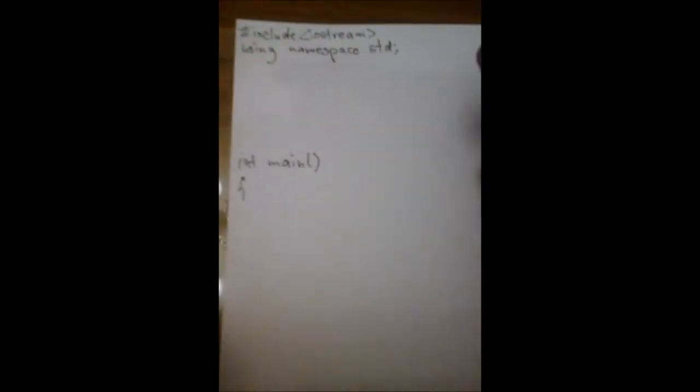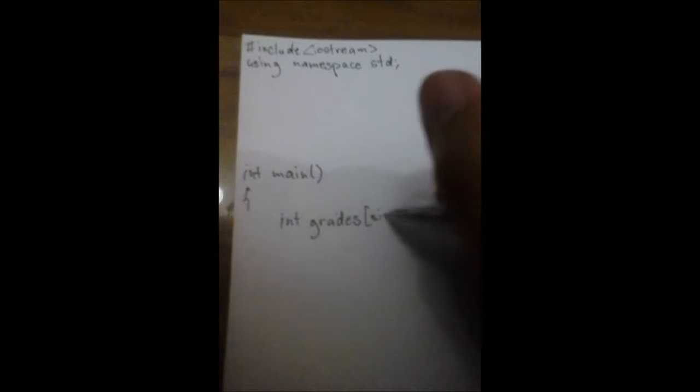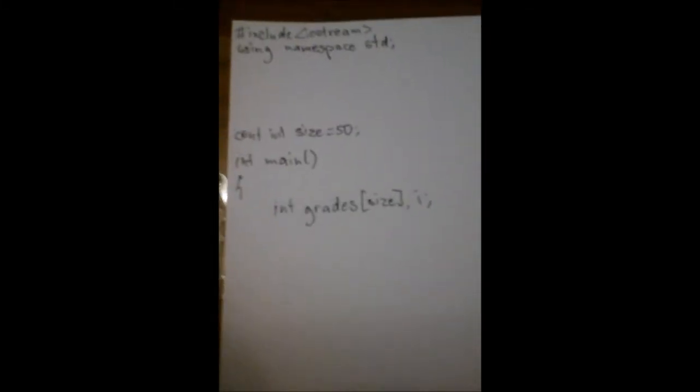So first is we declare our variables. Int grades, this is our array, then size, then also i, which we will use for the for loop. Then we declare here the size, constant int size, which is, will be 50. Since the only required grades is only 50.